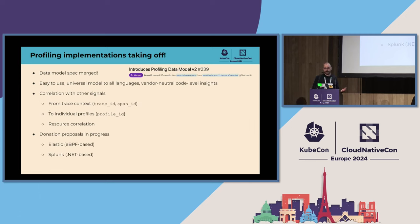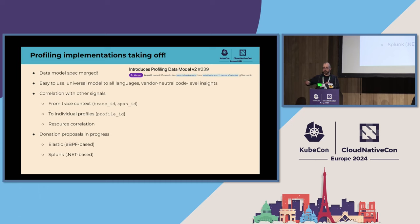The big announcement for profiling is that the data model spec was finally merged and profiling implementations are ready for takeoff. This provides a universal model to all languages so profiling profiles are represented equally, and of course being part of OpenTelemetry it's vendor neutral. Most importantly, it enables correlation with all signals from trace context — trace ID and span ID correlating back to profiles, and resource correlation since all telemetry emanates from a single resource.